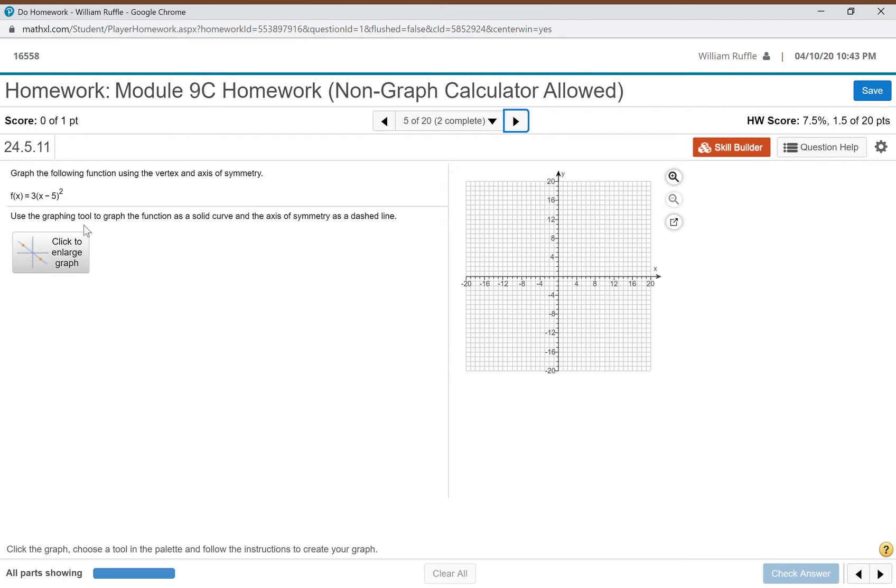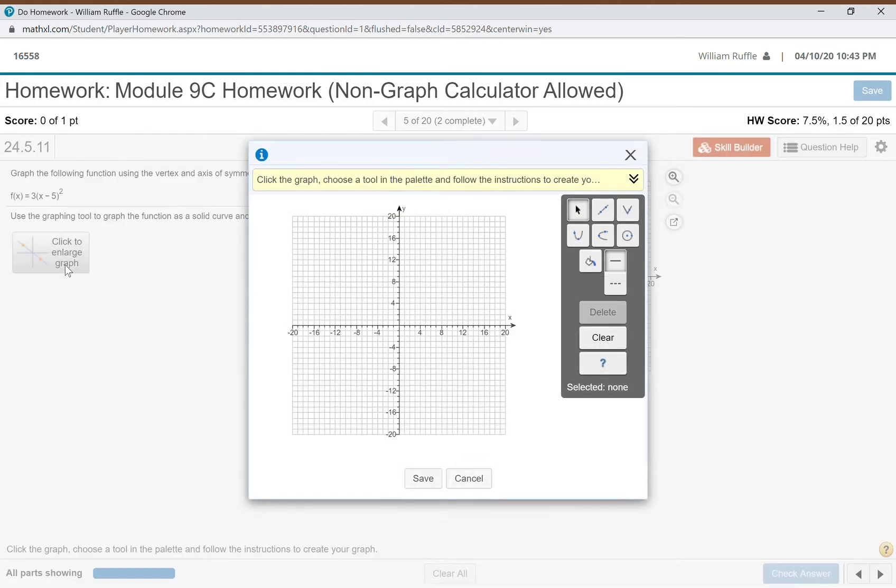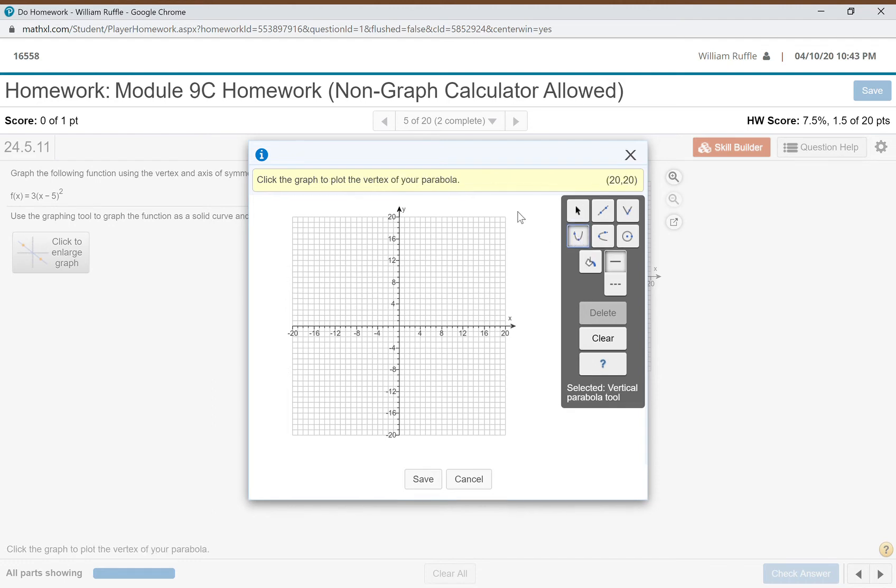Now this one is in standard form, so I need to know what the vertex is. Click to enlarge this. What makes inside the parentheses zero—that means it's a five—and then there's nothing added to it, so the vertex is five, zero. When I click over here it says vertical parabola tool. I click on it. It says plot the vertex of your parabola. That's the first thing I must do.